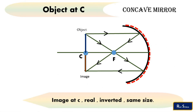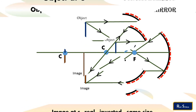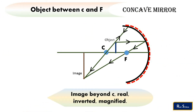In this case, the object is located at the center of curvature. Two light rays come from the object and after reflection they meet and form the image at the same position, that is, at the center of curvature. An image of the same size as the object is formed here. In each of these cases we observe the object is moved gradually closer to the mirror.